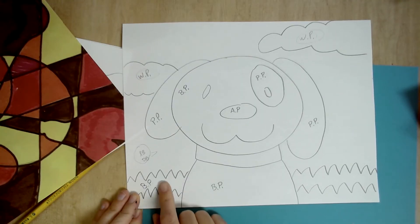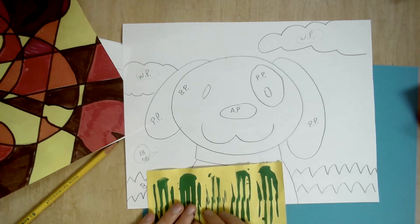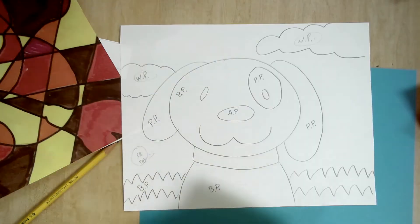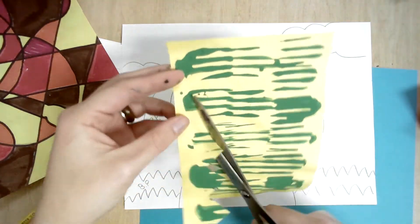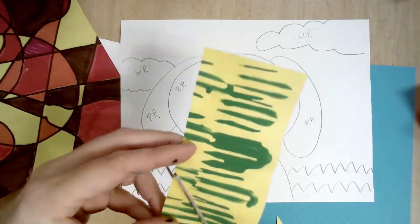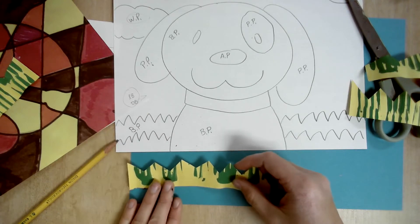So the grass is also behind my dog. So I have this, and I'm going to cut out some rows of grass. So it's a zigzag line, so I'm going to cut zigzag.